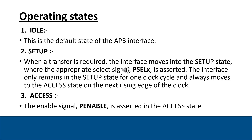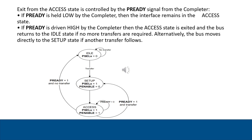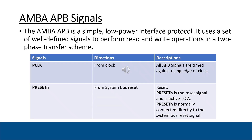The PREADY signal is provided by the peripheral. It indicates the peripheral is ready to complete the transfer. PREADY controls the exit from the access state. If PREADY is high, the transfer is completed. If PREADY is low, the bus remains in the access state until PREADY becomes high. After the access state, if there is no further transfer, the bus returns to idle. If another transfer is pending and PREADY is already high, the bus goes back to the setup state for the next transfer.